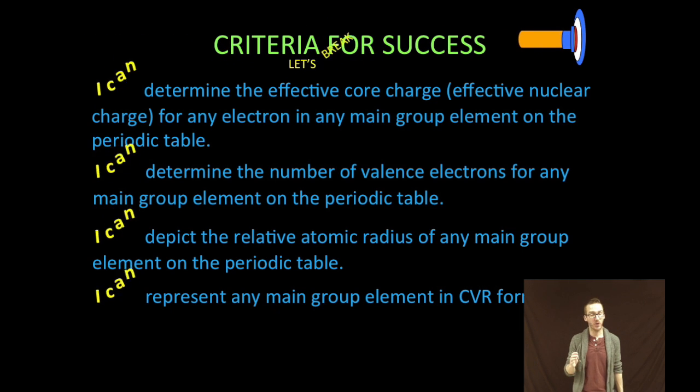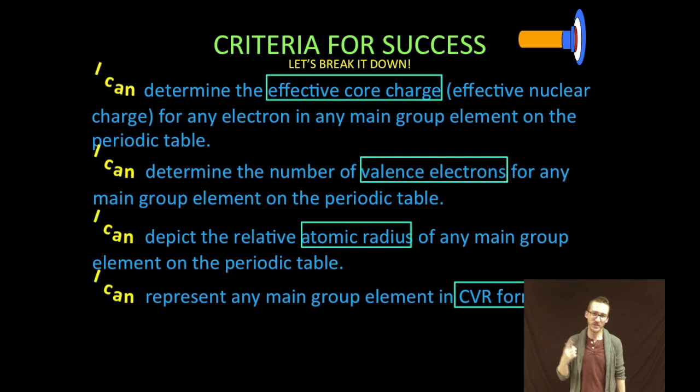Alright, so we're going to break that down. First thing we're going to do is determine what's called the effective core charge, or effective nuclear charge, for any electron in any main group element on the periodic table.